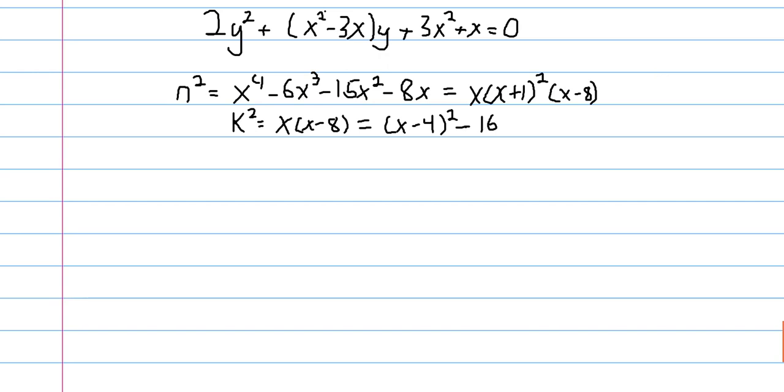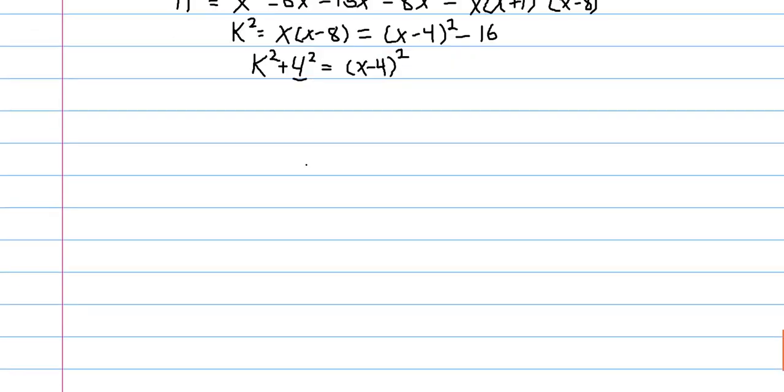And when I think three perfect squares, I think Pythagorean triples. And I think, I don't want the 16 on this side. I want the 16 on this side. And what we get is that k squared plus 4 squared equals x minus 4 squared. And so, we have a Pythagorean triple, and we know one of the legs. One of the legs of this triangle is 4.